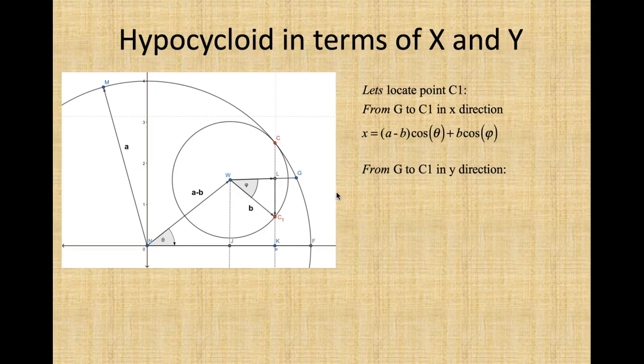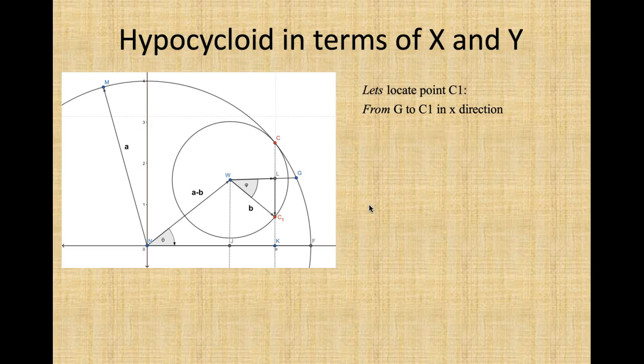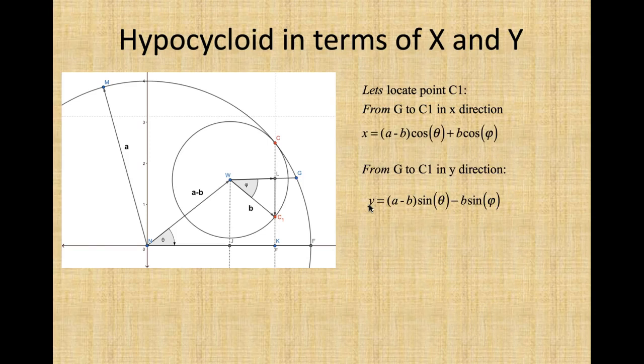From G to C1 in the y-direction, we have A minus B. Y is equal to (A minus B) times sine theta. And that's it. So W and W is on the same line as Y, minus B sine phi.